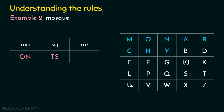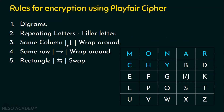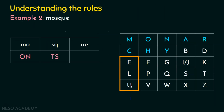The third digram is UE. U is here and E is here. They are not in the same row — they are in the same column. When digrams are in the same column, we move down. Moving down from U: nothing is below it, so we wrap around — the next letter is M. Moving down from E gives L. So U encrypts as M and E encrypts as L, giving ciphertext ML.